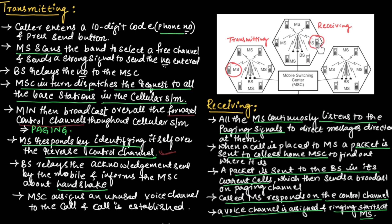Once the call is placed to the mobile station, a packet is sent to the caller's home mobile switching center to find the caller mobile station. Then the packet is sent to the base station in its current cell, which then sends a broadcast on the paging channel. The called mobile station will respond on the control channel, and a voice channel is assigned and ringing starts at the receiving mobile station.